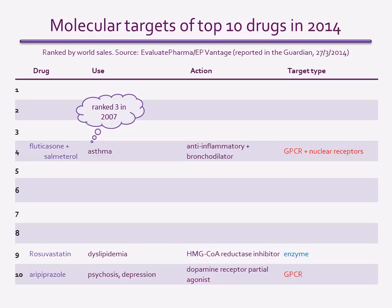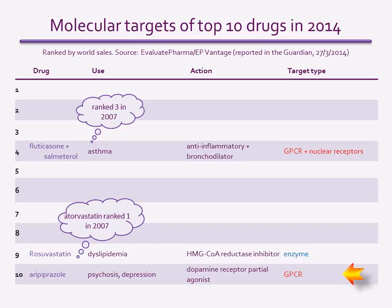Rosuvastatin, used to treat hyperlipidemia, did not make the top 10 in 2007 although it was available. But it is from the same drug class as atorvastatin, which previously ranked number one. This reflects clinical trials in the intervening period which demonstrated a better outcome for patients taking rosuvastatin, so it replaced atorvastatin as the drug of choice. The neuroactive drug aripiprazole was a newcomer to the list in 2014, taking 10th spot. It was available for schizophrenia and bipolar disorder well before 2007, but after 2007 its indications were widened to include depression, so more patients had access to it.